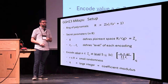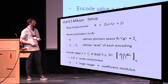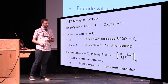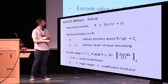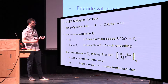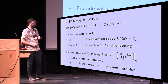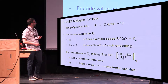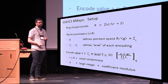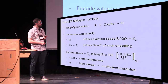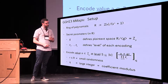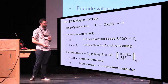These encodings live in a ring of polynomials mod some cyclotomic polynomial. GGH13 has basically two important classes of secret parameters. The most important is the parameter G, which defines the plaintext space. If you take the ideal generated by G and mod R by that, that's the plaintext space, and by choosing G appropriately you can show this is isomorphic to a prime field. The other important secret parameters are the Z_i, which define the level of each encoding.